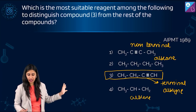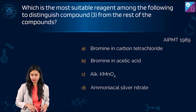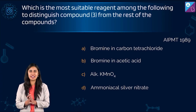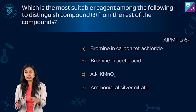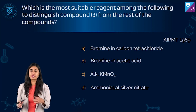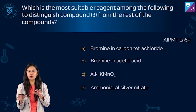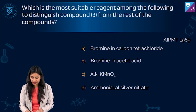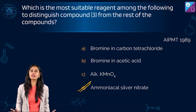The options are: (a) bromine in carbon tetrachloride, (b) bromine in acetic acid, (c) alkaline KMnO₄, (d) ammoniacal silver nitrate. To distinguish an alkane from an alkene, bromine in carbon tetrachloride or Baeyer's reagent works. But to distinguish an alkene from a terminal alkyne, bromine in carbon tetrachloride won't work — you need ammoniacal silver nitrate. So the correct answer is option D: ammoniacal silver nitrate.